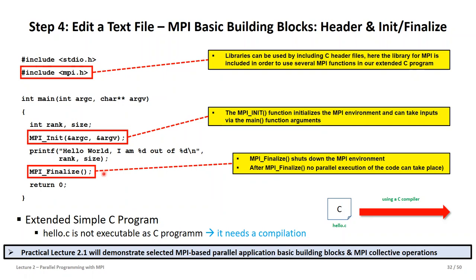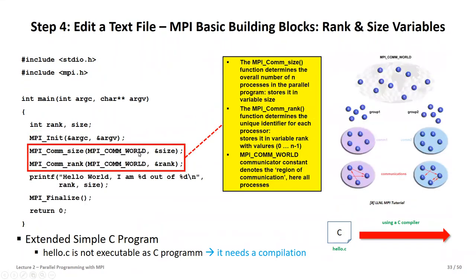This is still not really complete — rank and size are not yet defined. The MPI standard provides very helpful functions. We have MPI_Comm_size of the MPI_COMM_WORLD communicator — that was the world of communicators where every processor is included, and it is always defined like that.